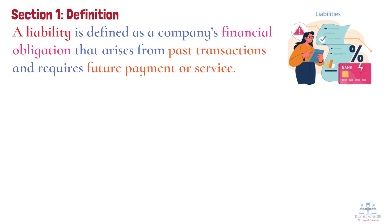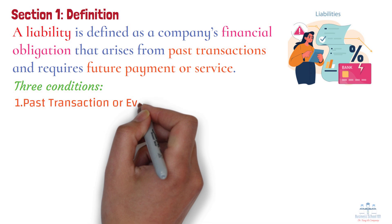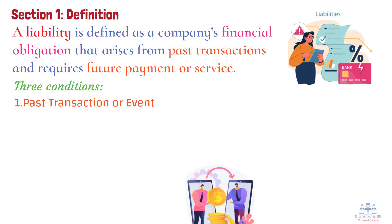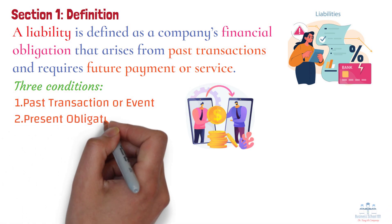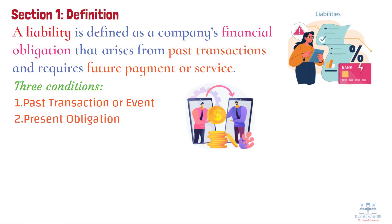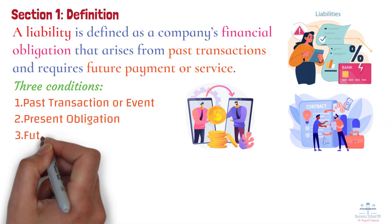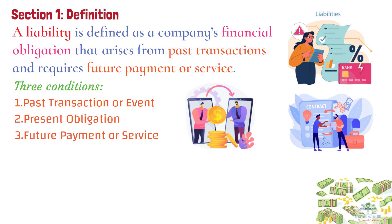To qualify as a liability, an obligation must meet three conditions. First, past transaction or event — the liability must arise from a past event or transaction, such as borrowing money or receiving goods on credit. Second, present obligation — the company must have a legal or contractual obligation to pay. Third, future payment or service — the liability must result in a future outflow of cash, goods, or services.